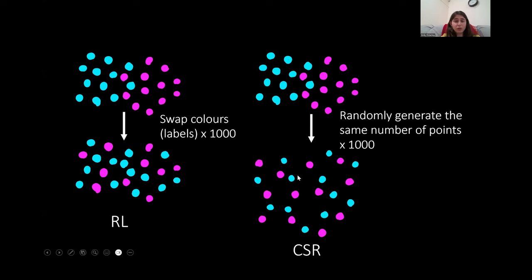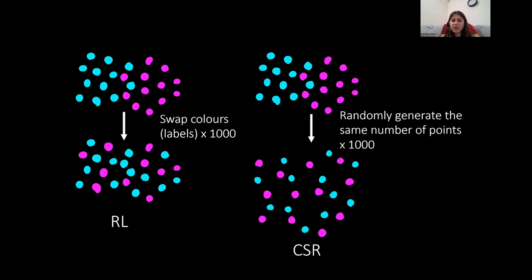There could be rivers in the way, difficult terrain, etc. So it is a bit of a cheat way of saying your result is statistically significant. What you should actually do is called random labelling or RL, where you take your observed point pattern and you randomly shuffle the labels and repeat this 1000 times — or however many permutations you decide, but usually it should be 1000. Then if your original point pattern is more clustered than all of the shuffles, it will exhibit a statistically significant degree of clustering.